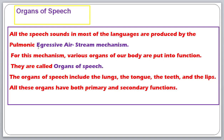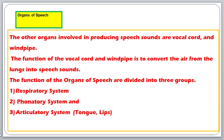These parts are called organs of speech. They include the lungs, tongue, teeth, and lips. These organs have two functions: primary functions performed by primary organs, and secondary functions performed by secondary organs. The primary organs include the vocal cord, lungs, and windpipe.